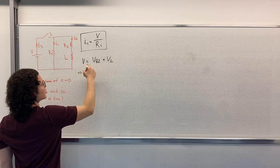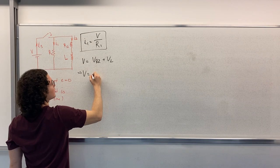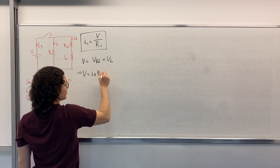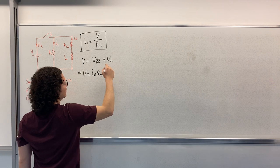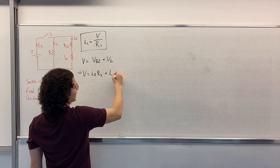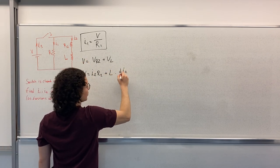V is equal to V R2, which is equal to I2 times R2. And V L, which is equal to L times D I2 over DT.